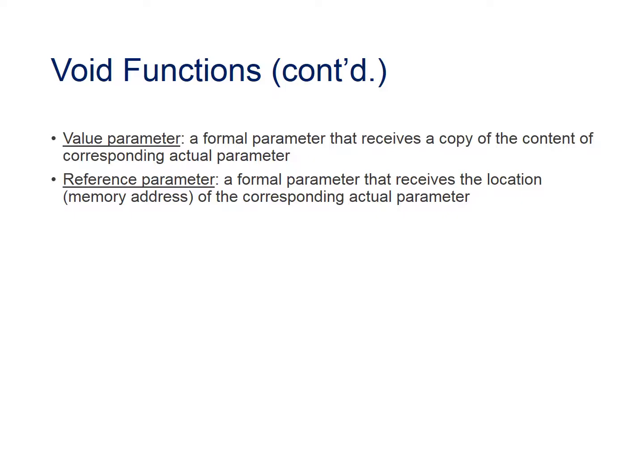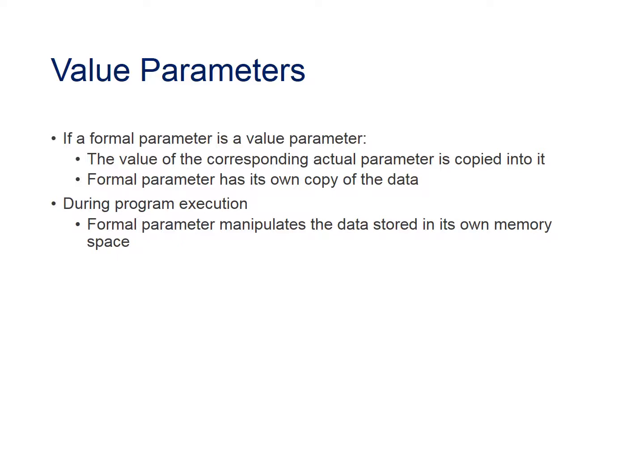Void functions have two types of parameters. A value parameter is a formal parameter that receives a copy of the contents of the corresponding actual parameter. The formal parameter has its own copy of the data, and during program execution the formal parameter manipulates the data stored in its own memory space.